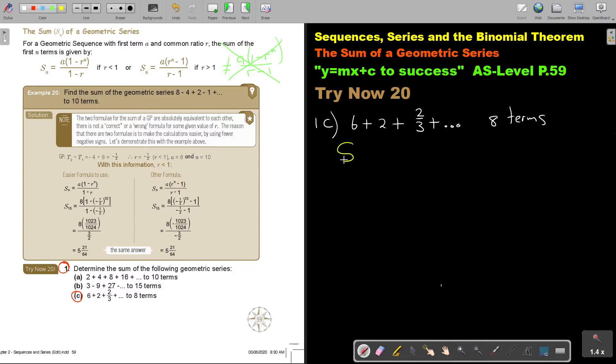I want you to do number 1, to 8 terms. So, basically, I want S8. Don't forget that the value of A is 6, and the value of R, I can take, say this is T1, this is T2. Then it's T2 divided by T1. So, it's 2 over 6, which is then a third.